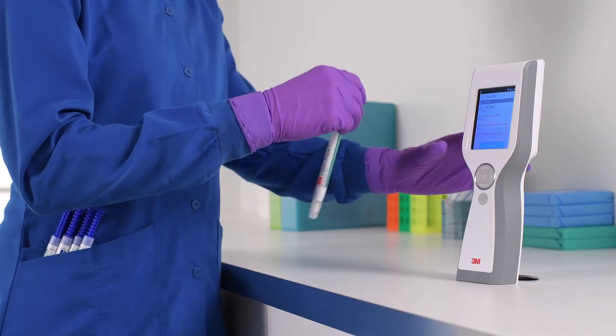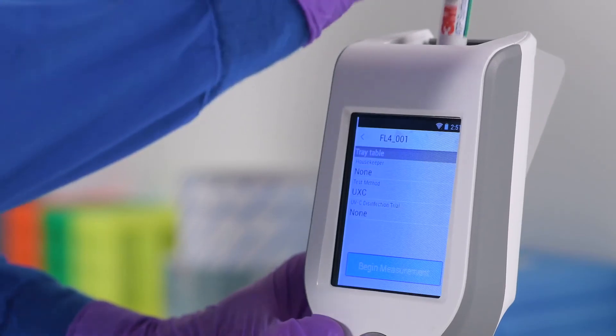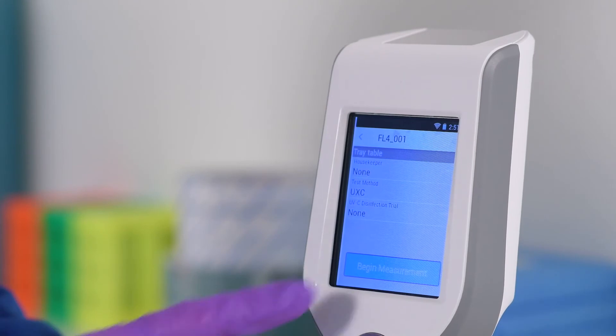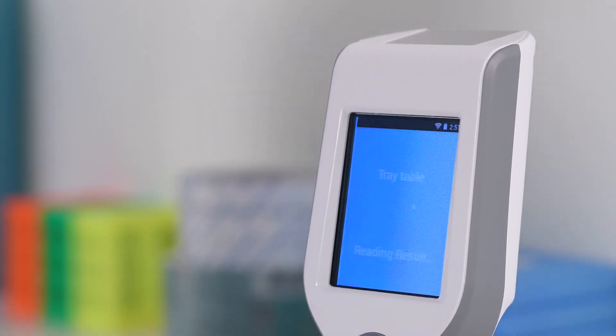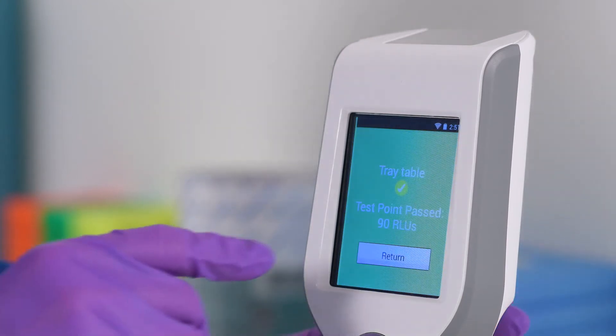Insert the test into the CleanTrace Luminometer LX25 and follow the on-screen prompts to take a measurement. In 10 seconds or less, you'll see the result, a quantitative RLU value and a pass or fail response.